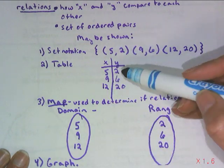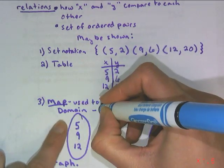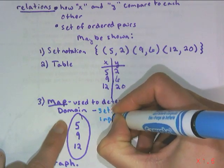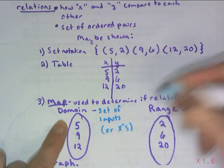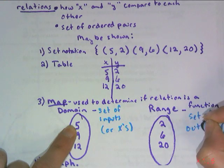The domain is on the left because if you look at this table, all of my inputs, so domain we're going to define as a set of inputs or x's. And then the range is your set of outputs or y's.